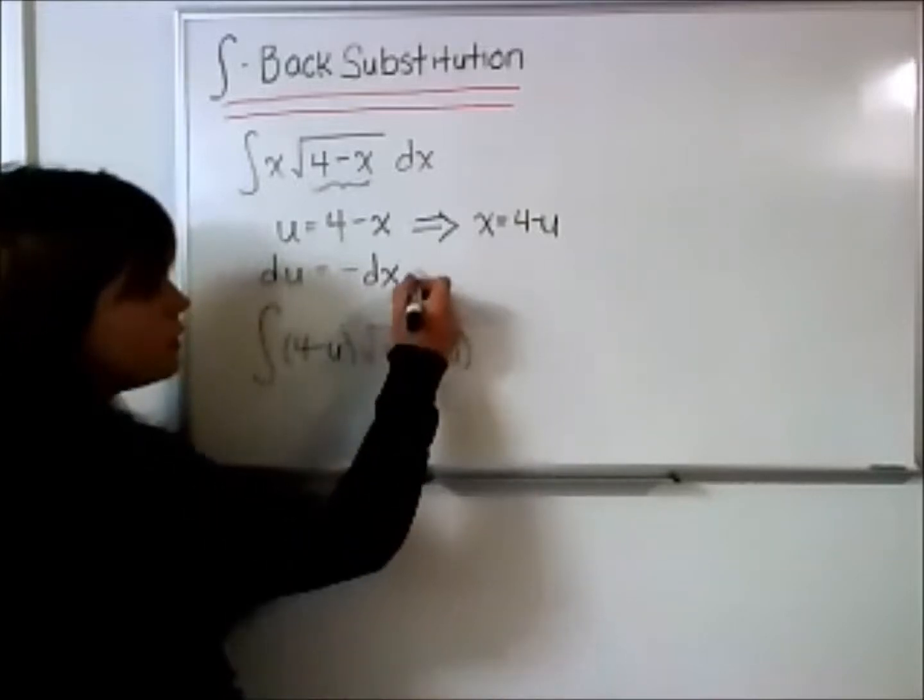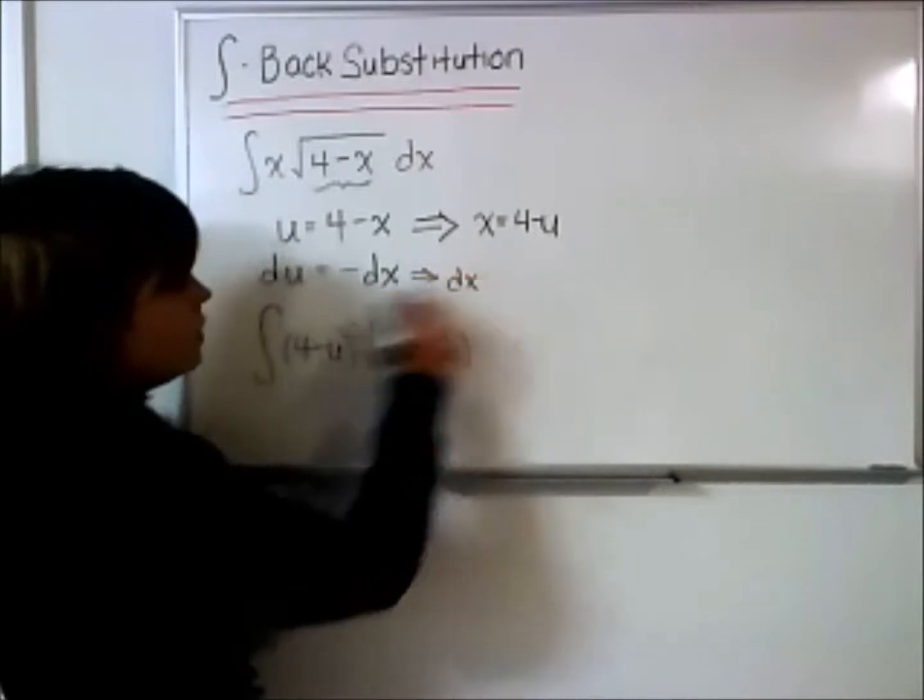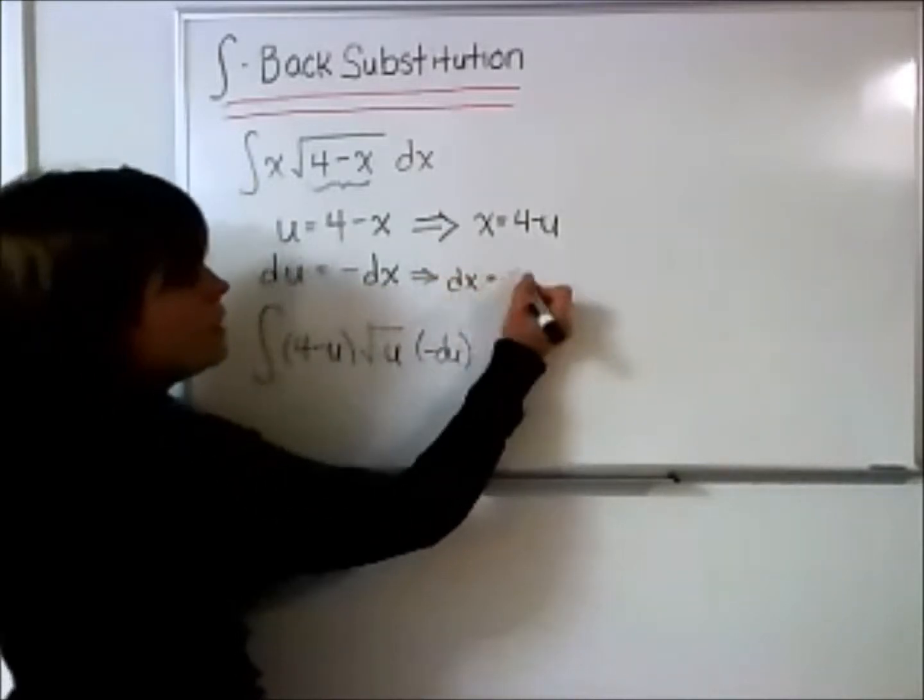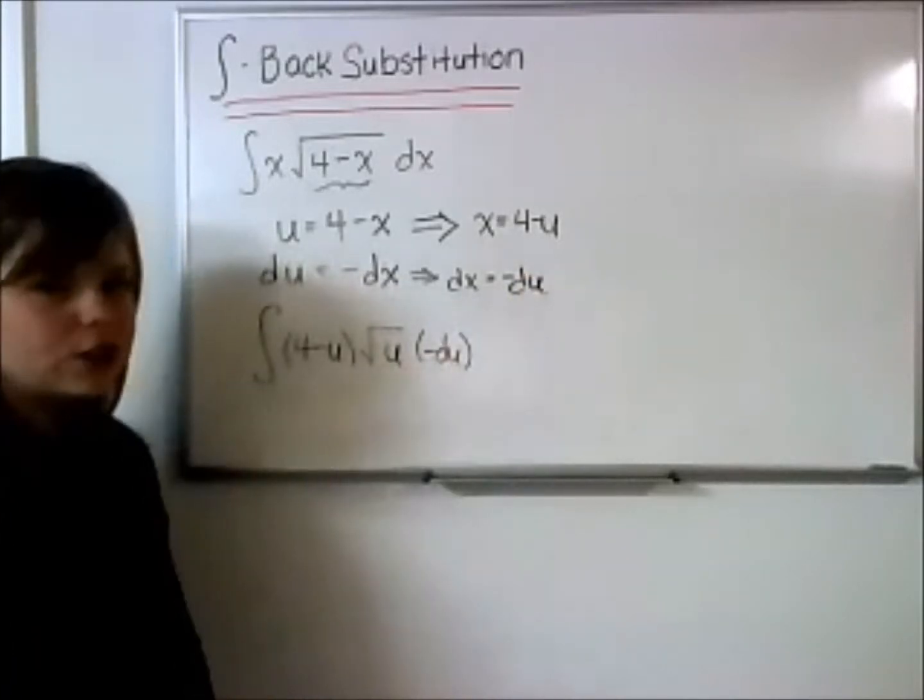And if you're more comfortable seeing how that works, multiplying each side by negative will get dx equals a negative du. And that's how I got that expression there.